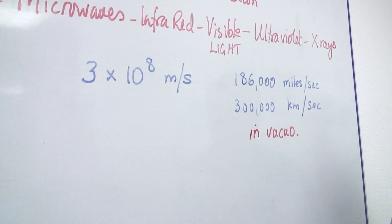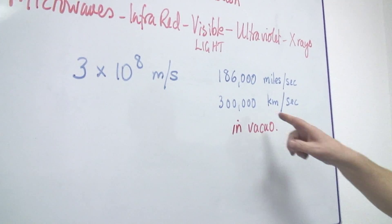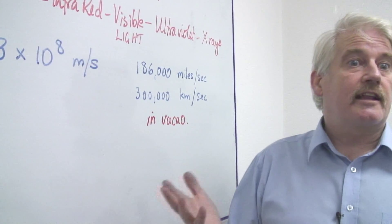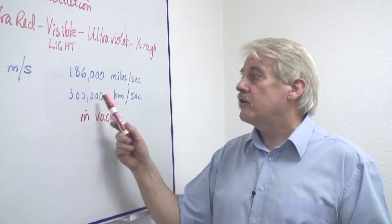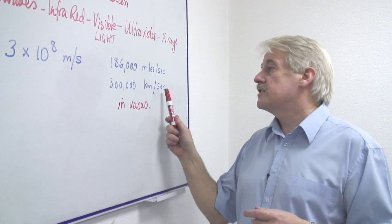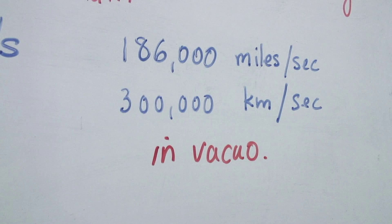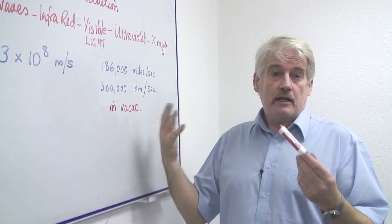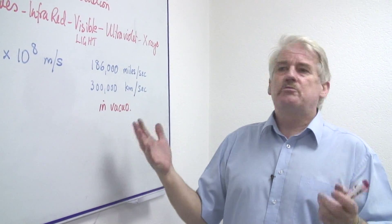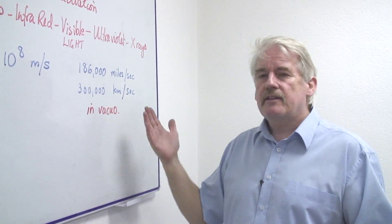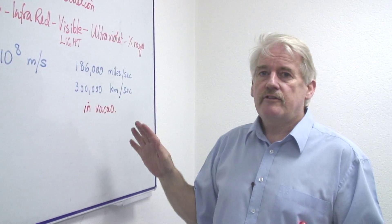Of course if I actually ask light to travel through something like glass, it would go down to 200,000 kilometers a second because it travels slower in transparent media. So if it's in plastic it would be about 250,000, in glass 200,000 and so on.